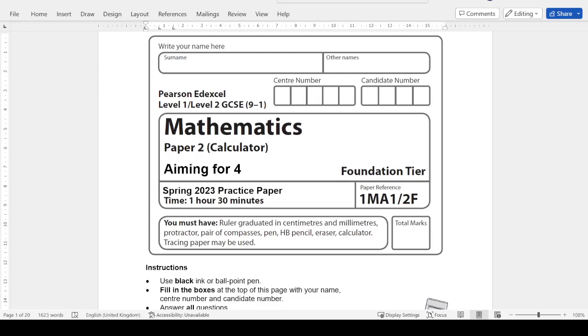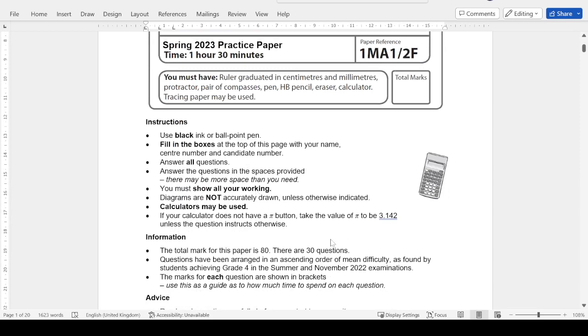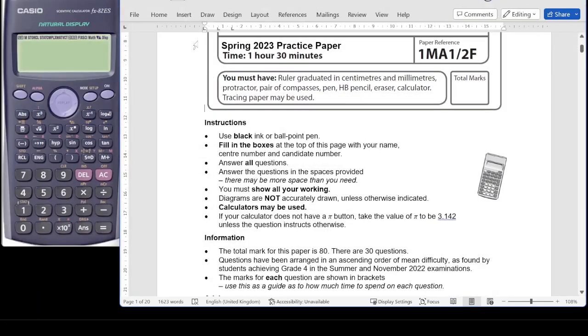Hello and welcome to another exam paper walkthrough. Today we're looking at another paper from the NXL aiming for a grade range. We're looking at the aiming for grade 4 paper 2, so this is the calculator paper. I'll get straight in. We're looking at 30 questions on this paper, so I'll do this as three chunks of ten questions, three videos of ten questions. Today I'll be using my old emulator from the FX82 range.